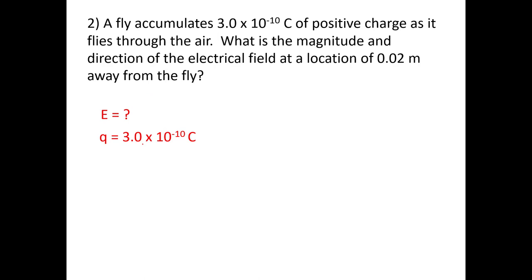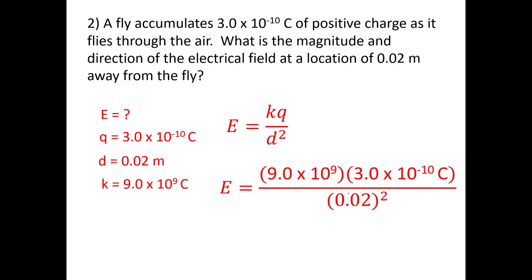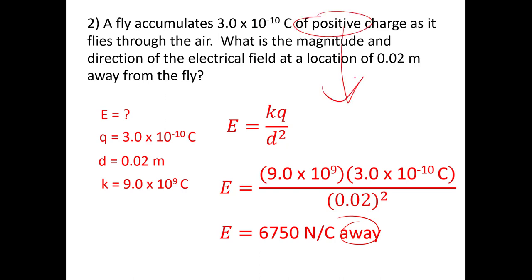In this question you're given a charge and a distance, so you have to use the equation with k — it's not given, you have to know k = 9 × 10⁹. Plugging in all the values using E = kQ/r², you get 6,750 newton-coulombs away. The 'away' direction is because it was a positive charge — any positive charge in its field would move away from it.